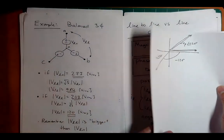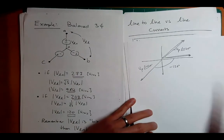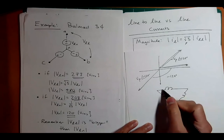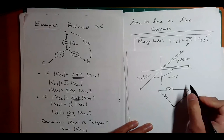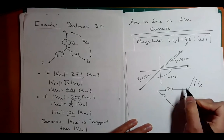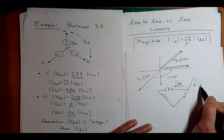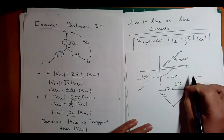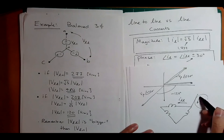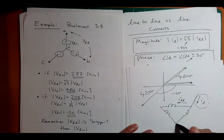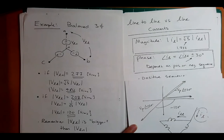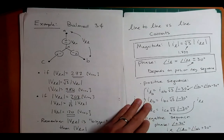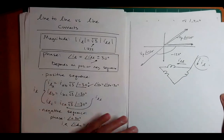Now let's look at the current. In a delta load, you have a line current and a line-to-line current. The line current will be bigger than the line-to-line current by root three. The line current lags the line-to-line current by 30 degrees for a positive sequence. Let's look at a simulation to verify: I have a balanced positive sequence three-phase source, and I expect the line current to be bigger than the line-to-line current.